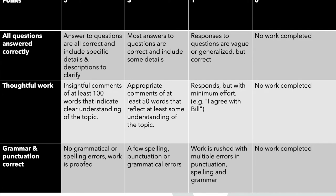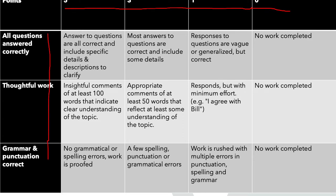A good rubric has three things: criteria, ratings, and a rating scale. The rating scale is here — 5, 3, 1, 0 points. The rating criteria is here: all questions answered correctly, thoughtful work, grammar and punctuation correct. And then within the rubric grid there are descriptions of what each criteria means.